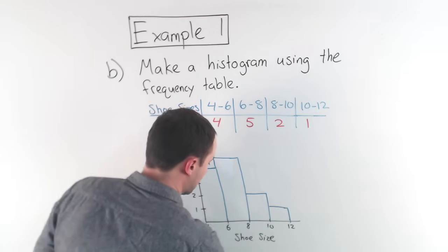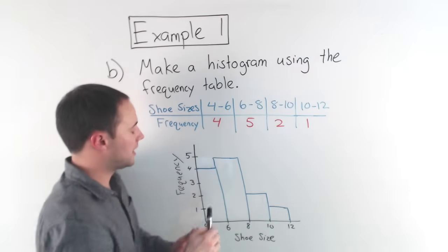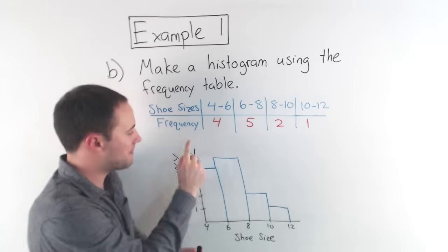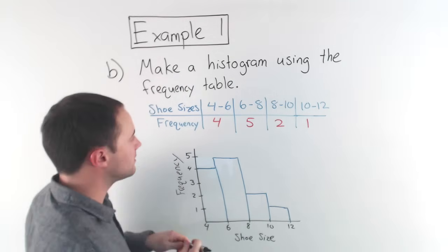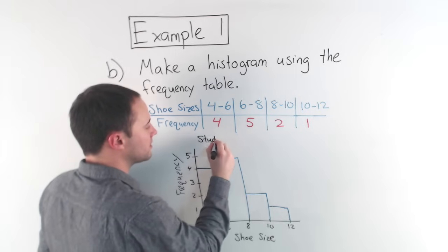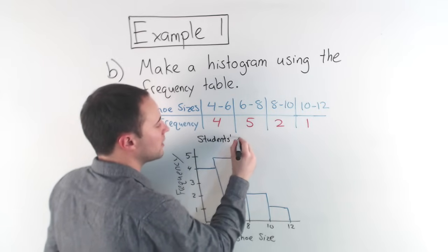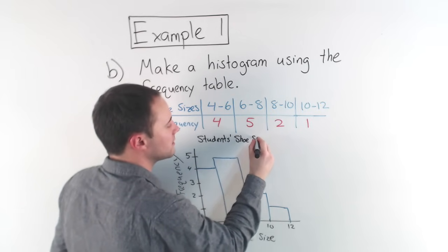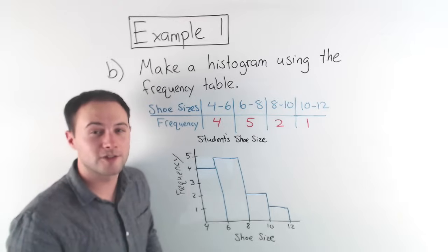Okay. Finally, I'll add a little title at the top. You don't need a key for a histogram. So I'll just say for the title students shoe size. Here's one to try on your own.